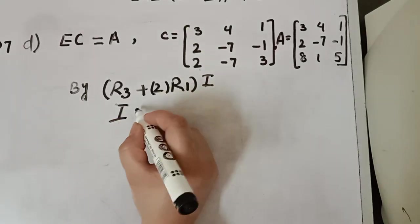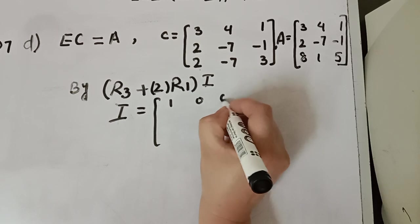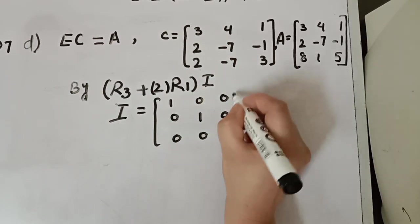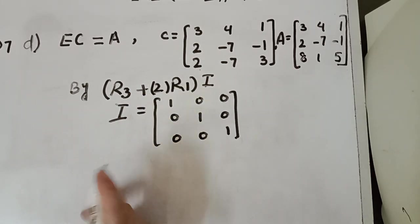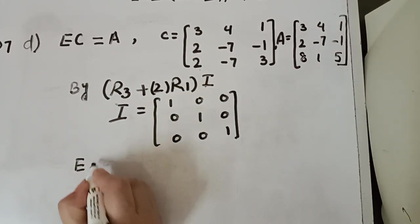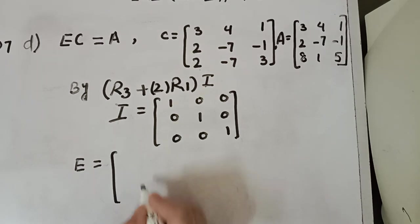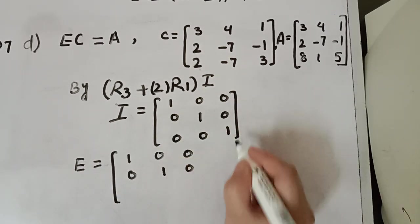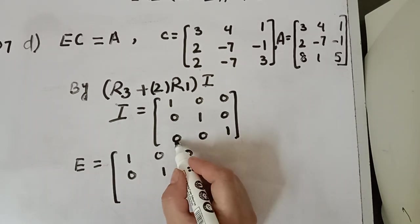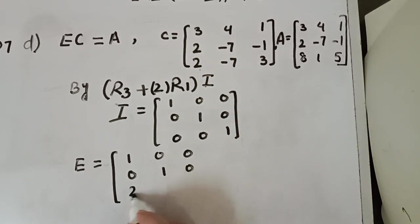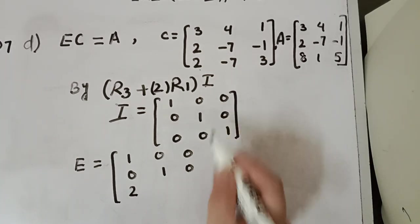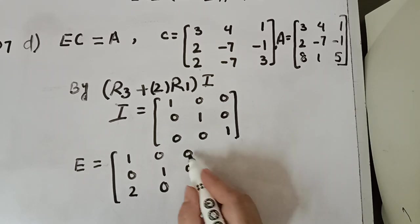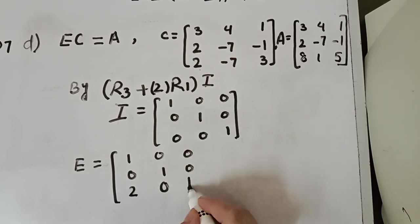Consider the identity matrix of order 3: 1, 0, 0; 0, 1, 0; 0, 0, 1. By this row operation to I, the elementary matrix will become: first row unchanged, second row unchanged. R3 will add 2 times R1: so the third row entries become 0 plus 2 times 1 is 2, 0 plus 2 times 0 is 0, and 1 plus 0 is 1.